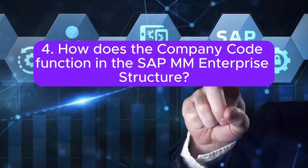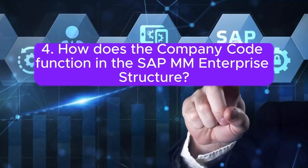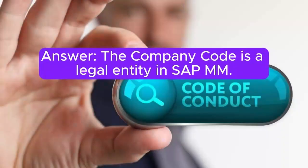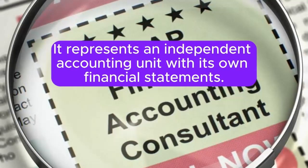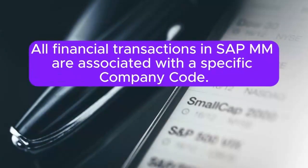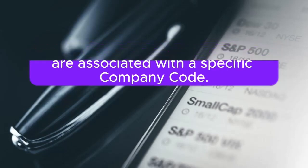Question 4: How does the company code function in the SAP MM Enterprise Structure? The company code is a legal entity in SAP MM. It represents an independent accounting unit with its own financial statements. All financial transactions in SAP MM are associated with the specific company code.